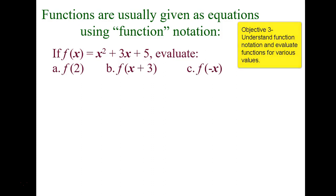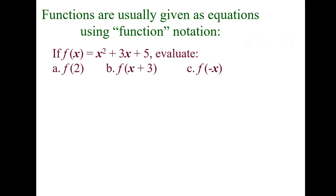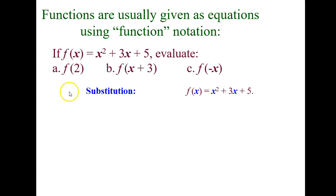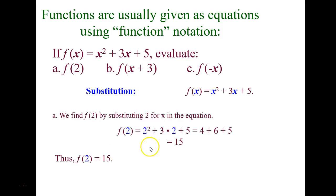Another way we talk about functions is function notation. Here's an example: f(x) = x² + 3x + 5. Be very clear that this is not f times x — a lot of students think it's multiplication. It means the function named f evaluated at input x. They're asking us to evaluate f(2), so we replace x with 2: 2² + 3(2) + 5. Following order of operations — exponents, then multiplication, then addition — we get 15. So the ordered pair is (2, 15).